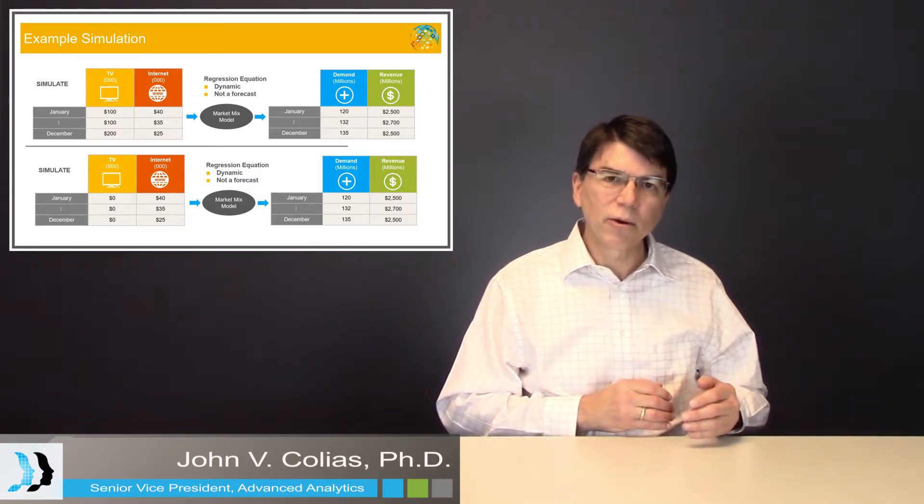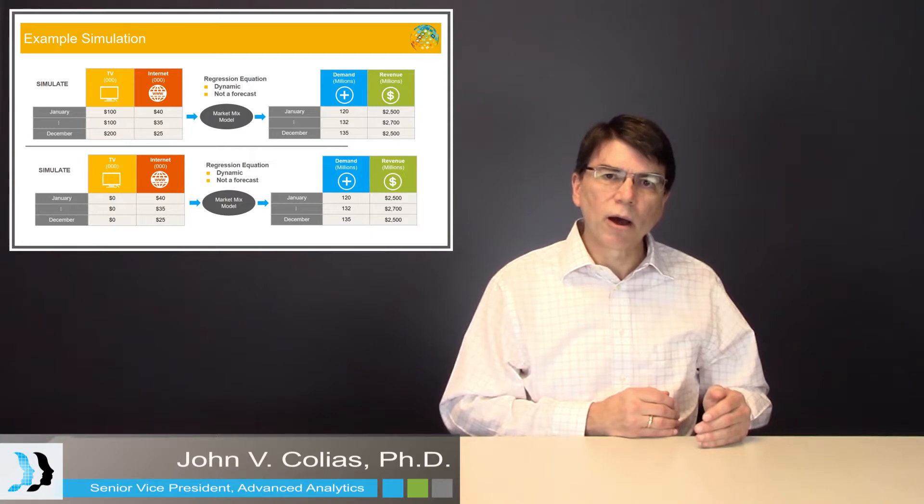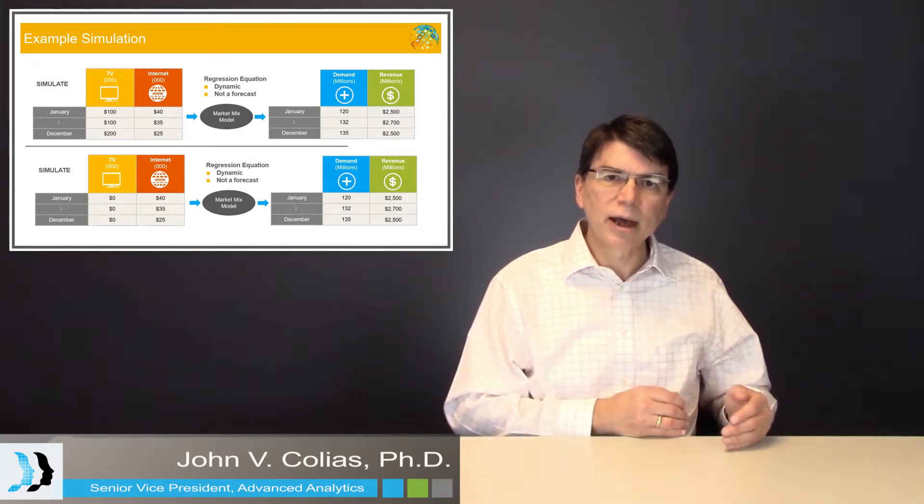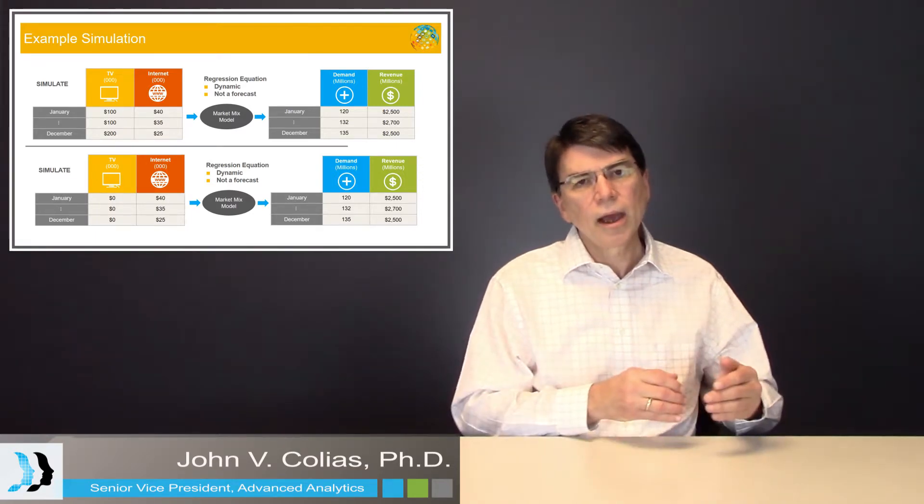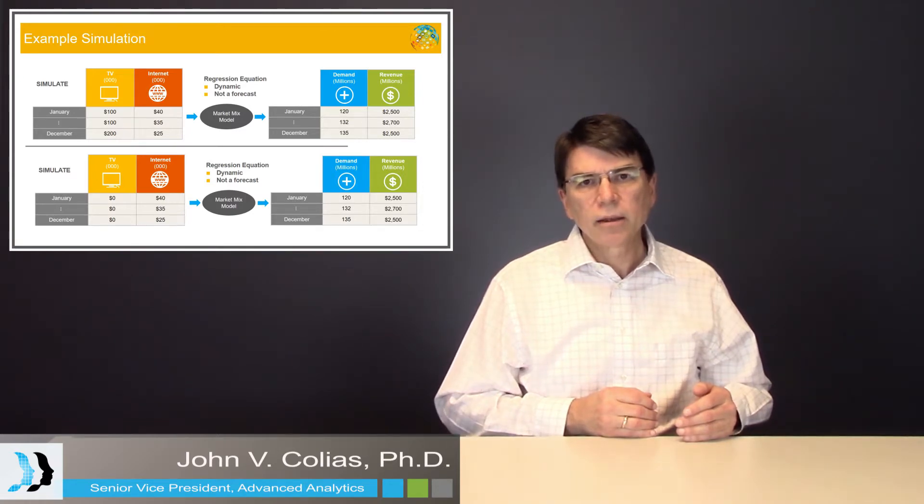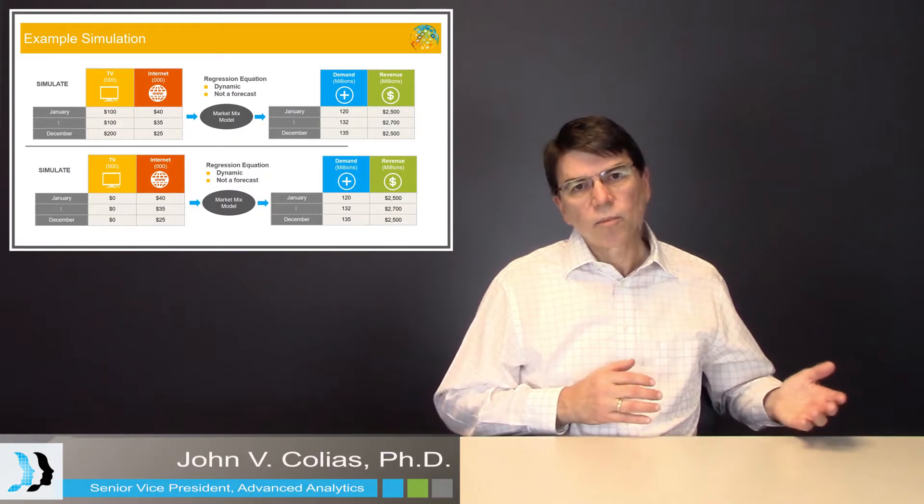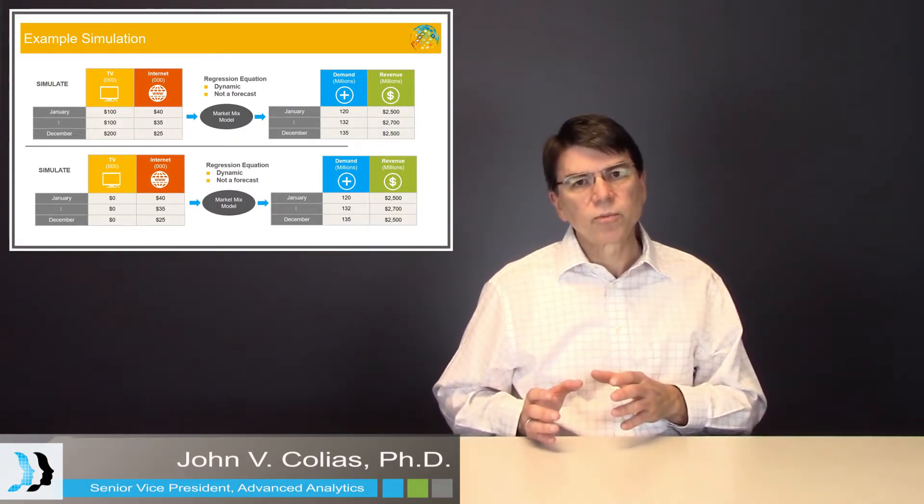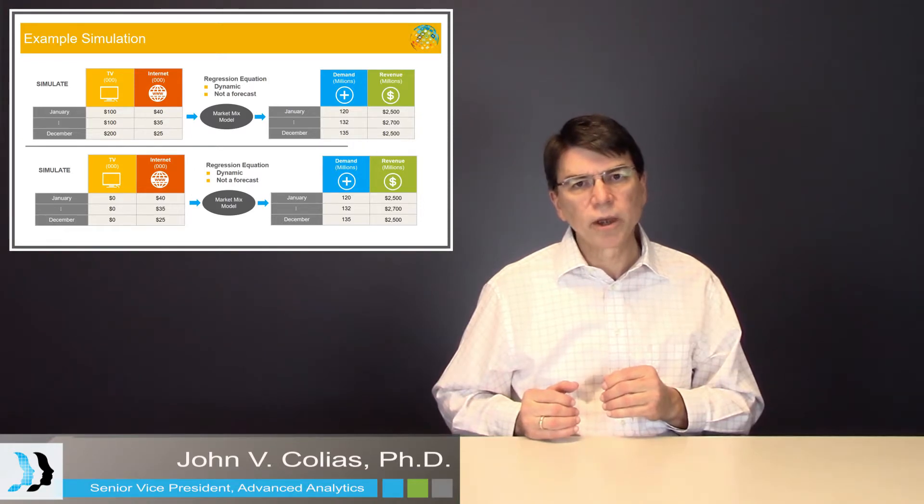the spend on TV advertising of $100,000 in January, and internet advertising, in this simple example of $40,000 in January, and the rest of the spend for the rest of the months of the year. And this first simulation includes the entire media plan. And the output, again, is the net revenue that's produced by that scenario with that full media plan.